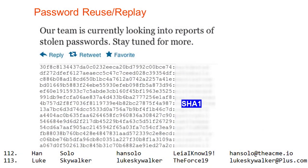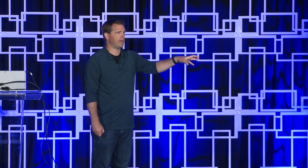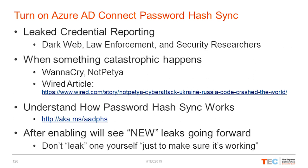Leaked credential detection: when a breach dumps SHA1 password hashes from a site that used corporate email addresses for registration, those passwords may match corporate AD passwords. Detection options include signing up for HaveIBeenPwned.com or enabling password hash sync through Azure AD Connect — Microsoft provides a 'Users with leaked credentials' report. Enabling password hash sync also provides a failover benefit: if on-prem AD has a catastrophic event, you can switch users to authenticate directly to Office 365 services by flipping a configuration bit.